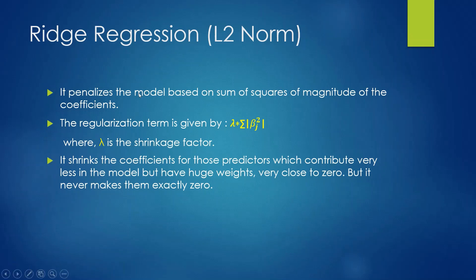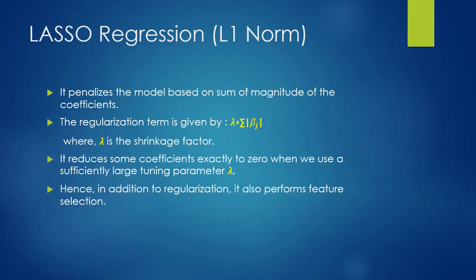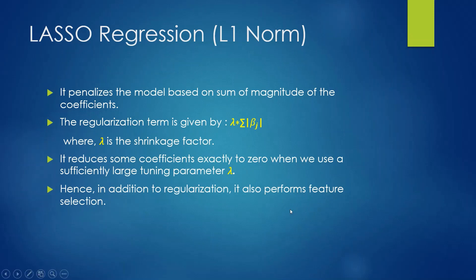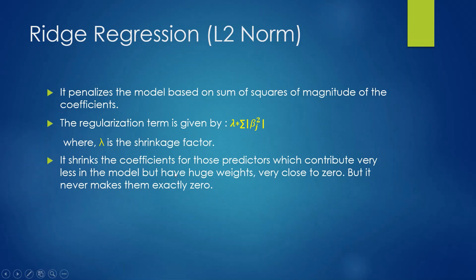What is ridge regression? It penalizes the model based on the sum of squares of the magnitude of the coefficients — this is the key difference. Lasso regression penalizes based on the sum of magnitude, whereas ridge regression penalizes based on the sum of squares of the magnitude, as seen in the regularization term. Lambda is also the shrinkage factor here. Ridge regression shrinks the coefficients for predictors which contribute very little in the model but have large weights, bringing them very close to 0 — but it never makes them exactly 0. This is one more key difference between ridge and lasso regression.